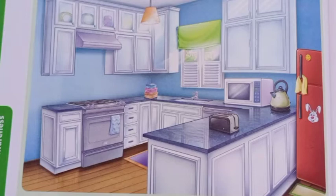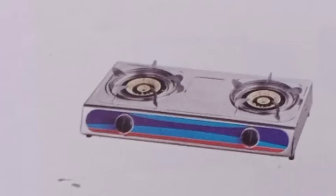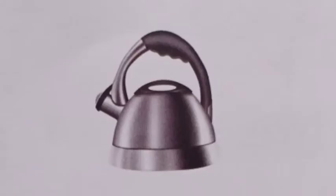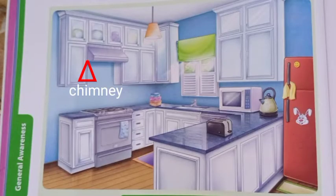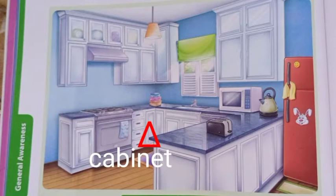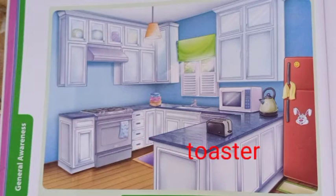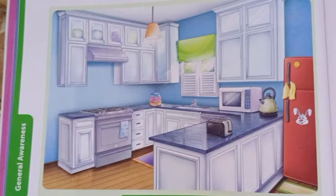In the kitchen you find a gas stove, cylinder, sink, tap, and refrigerator. Some kitchens also have a microwave. Gas stove is in every home. Then there is a kettle for making tea and coffee, plates, chimney, light, cabinets, and a toaster for making bread toast. The cupboards are where we keep sugar, flour, and small items.